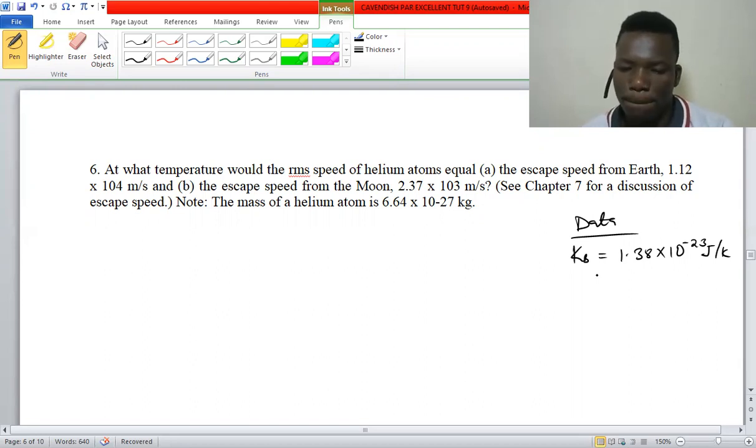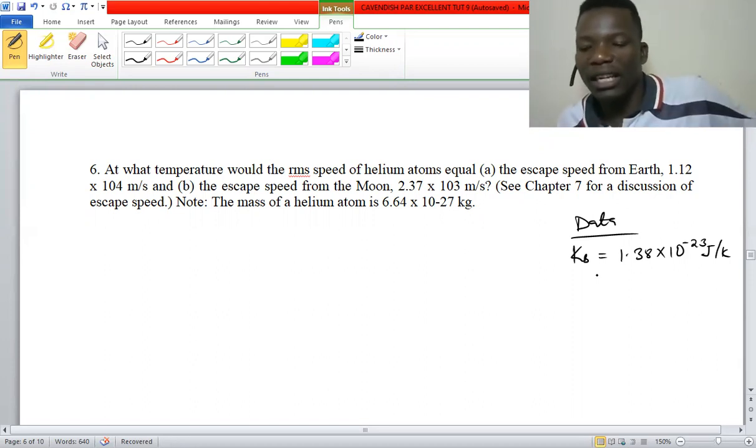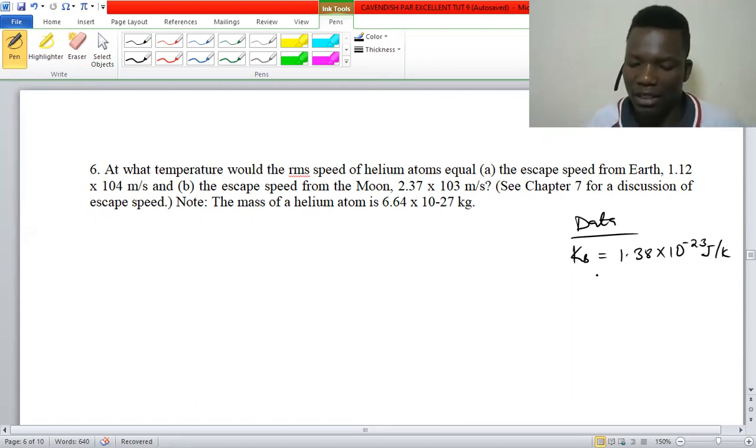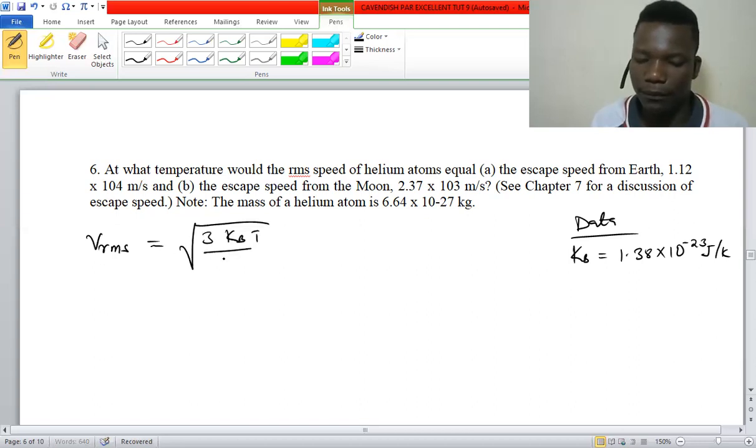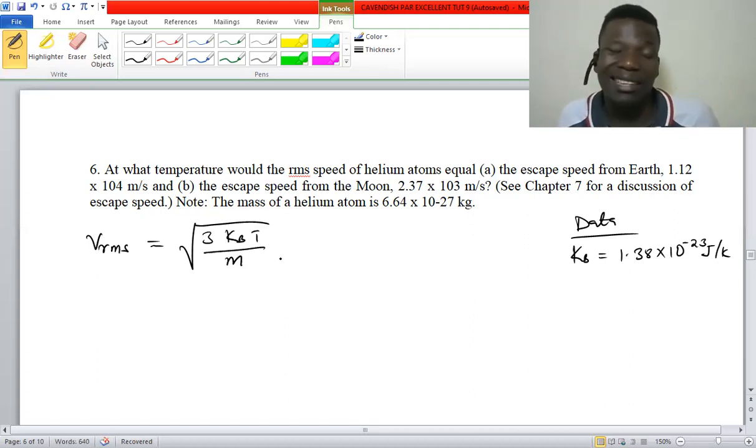If you did some general chemistry, you are going to remember this formula where we have RMS speed is given by the square root of 3 times Boltzmann constant times temperature divided by mass.